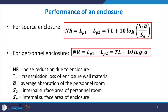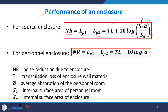For an enclosure, the performance is measured in terms of the noise reduction, which is the SPL before the enclosure minus the SPL after the enclosure. This is given as transmission loss plus 10 log of S·2·ᾱ divided by SE, where S is the surface area of the receiving room and SE is the surface area of the enclosure.